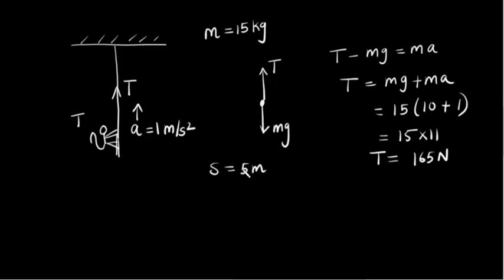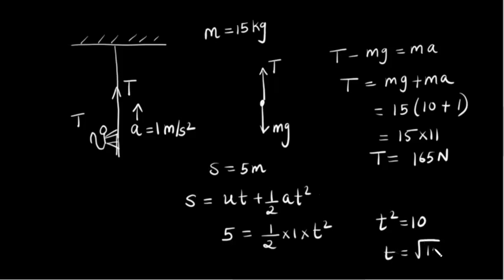We will use this formula: s is equal to ut plus half a t square. We have to find out t. U is 0 since it starts from rest, so 5 is equal to half into 1 into t square. From here we get t square as 10, so t is equal to root 10 second. The monkey will take root 10 seconds to reach the top of the ceiling.